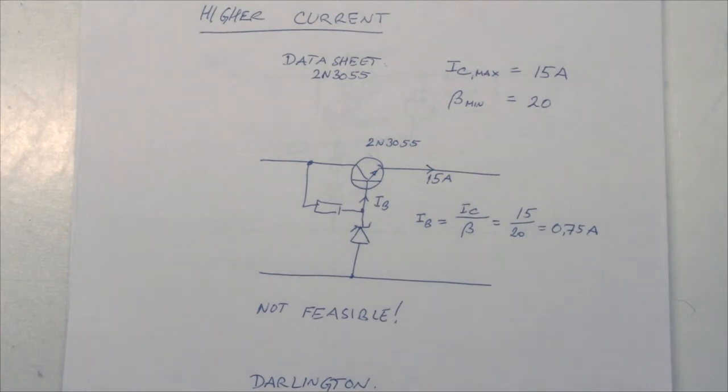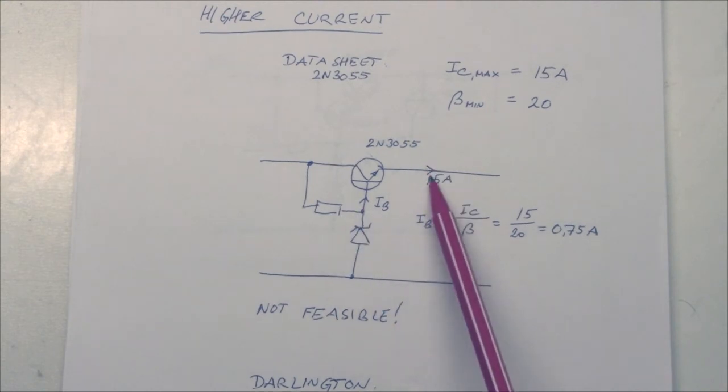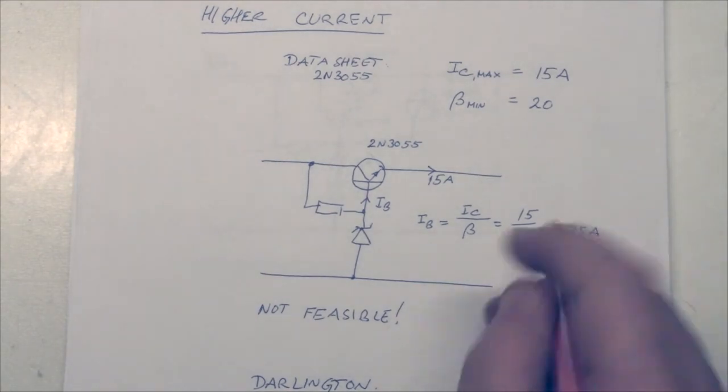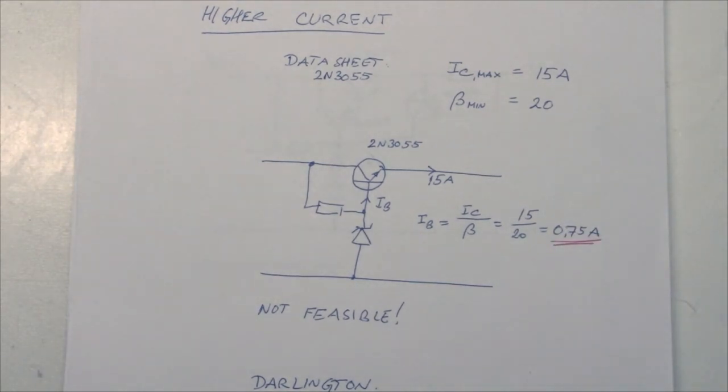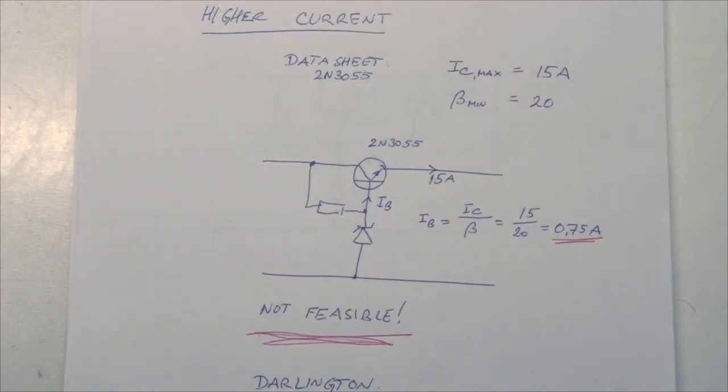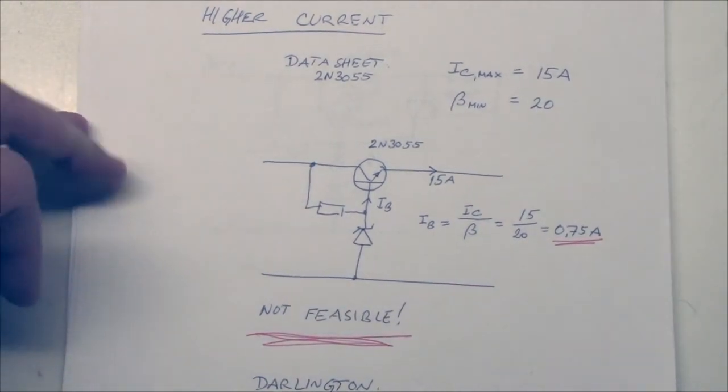Well, it's actually quite straightforward. Here I have the drawing that I forgot. We now have a 2N3055 with 15 A here, and the gain through here is about that one divided by the gain, which is worst case 20, giving a base current at 0.75 A. And that is not feasible.